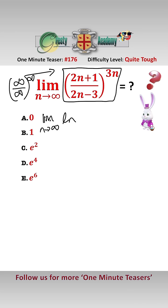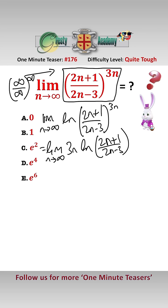So let's have a look at the limit as n approaches infinity of the log of 2n plus 1 over 2n minus 3 to the power of 3n. And that equals the limit as n approaches infinity of 3n times the log of 2n plus 1 over 2n minus 3.